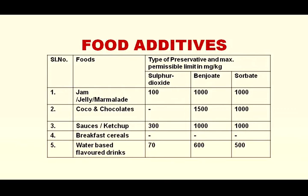Coming to food preservatives: jam, jelly, marmalade — sulfur dioxide 100 ppm, benzoic acid 1000 ppm, sorbate 1000 ppm. Cocoa and chocolate — benzoic acid 1500 ppm, sorbate 1000 ppm. Sauces and ketchup — sulfur dioxide 300 ppm, benzoate 1000 ppm, sorbate 1000 ppm. Breakfast cereal — no preservative is allowed. Water-based flavored drinks — sulfur dioxide 70 ppm, benzoic acid 600 ppm, sorbic acid 500 ppm.